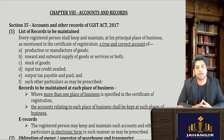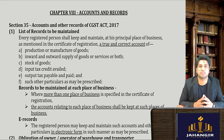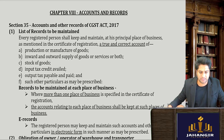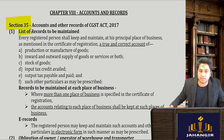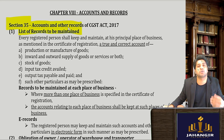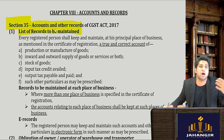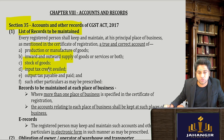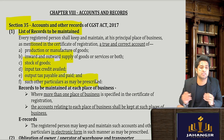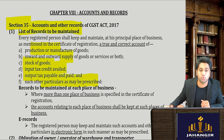We'll be doing the topic Accounts and Records, covered in Section 35 and Section 36. These are super simple sections. Section 35 simply says that you have to maintain a list and details of the accounts of your inward supplies, outward supplies, the inward tax paid, how many goods you have manufactured, the details of your supplies, how much credit you have availed, how many goods you have, how much output tax you're liable to pay, and any other particulars as may be prescribed.